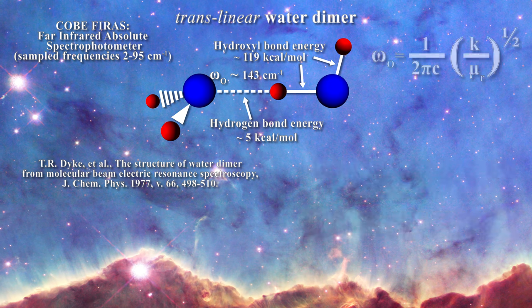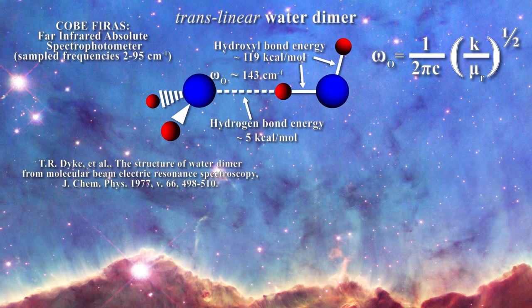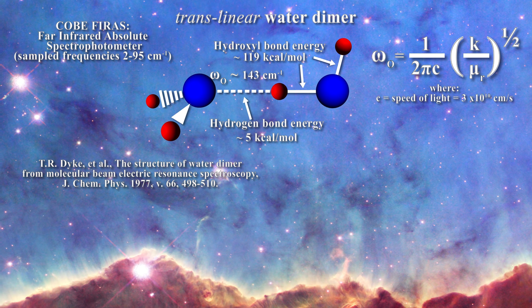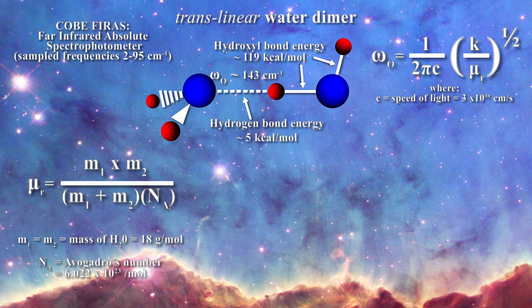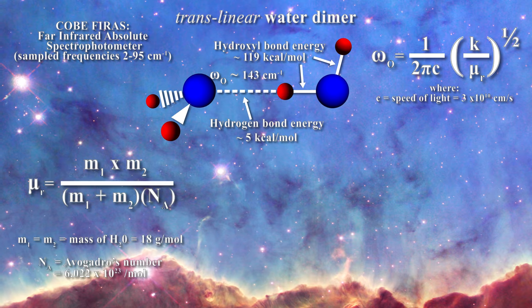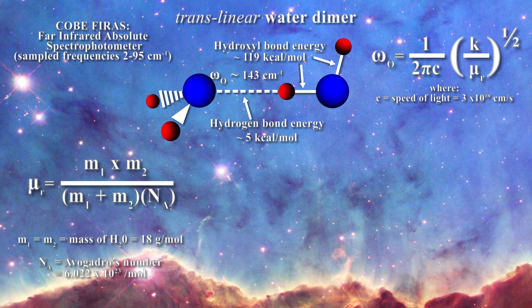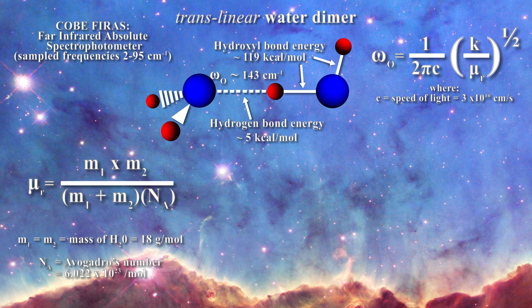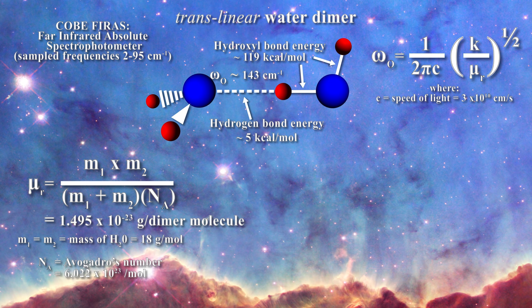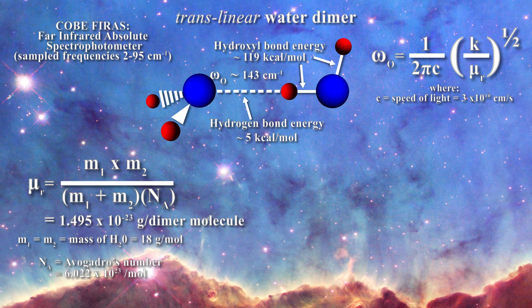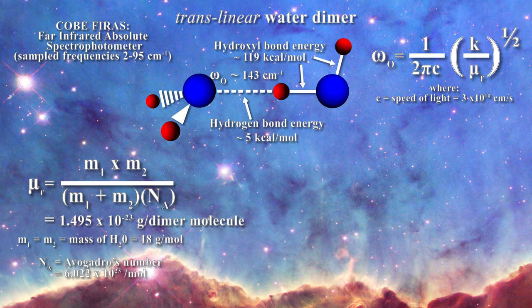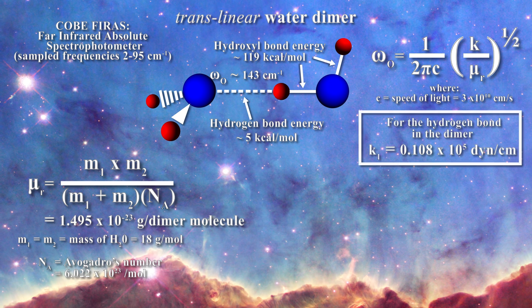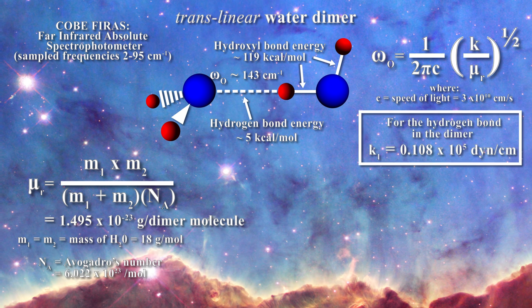In any case, we can use this equation to estimate the force constant of the hydrogen bond in the dimer where c corresponds to the speed of light. Mu is the reduced mass for the dimer which is given by this expression. In the reduced mass expression, one is multiplying the masses of interest in the numerator and adding them in the denominator. Avogadro's number is used to convert the mass for a single water molecule. For our problem, the reduced mass is equal to 1.495 times 10 to the minus 23 grams per molecule. When considering the fundamental frequency of 143 reciprocal centimeters, this results in a force constant of 0.108 times 10 to the fifth dynes per centimeter.